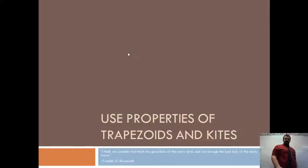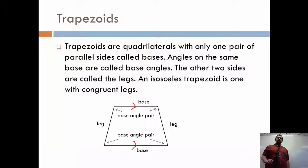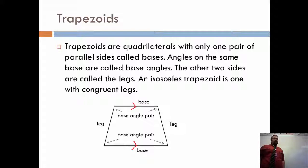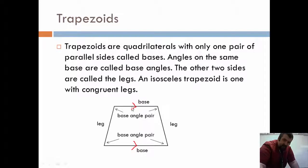These shapes are different than the other ones. We're going to break it into basically two parts — just trapezoids first, and in particular, isosceles trapezoids. Trapezoids are quadrilaterals with only one pair of parallel sides called bases. Angles on the same base are called base angles. The other two sides are called the legs. An isosceles trapezoid is one with congruent legs. This is a trapezoid because only one pair of sides is marked as parallel, and these parallel sides are what we call the bases. Each one is a different base.